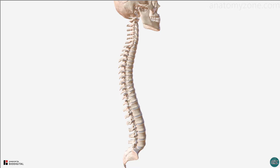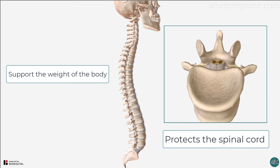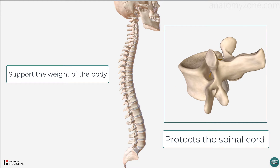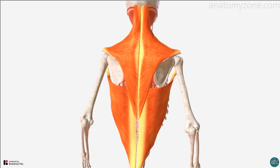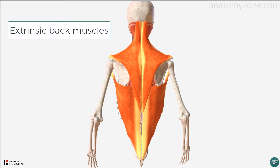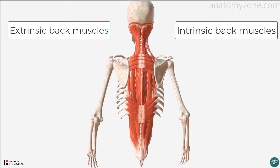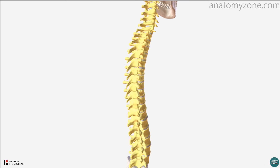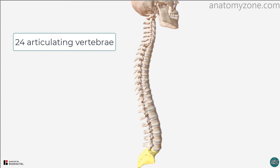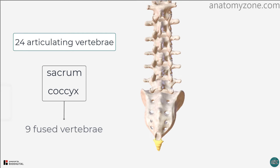The vertebral column is part of the axial skeleton and functions to support the body's weight and encloses and protects the spinal cord within the spinal canal. It provides a framework for the attachment of several muscles. The extrinsic back muscles are involved in moving the upper limbs and ribcage, whereas the intrinsic back muscles are important in maintaining posture and in moving the vertebral column itself. The vertebral column consists of 24 articulating vertebrae and then the sacrum and coccyx, which consist of 9 fused vertebrae.